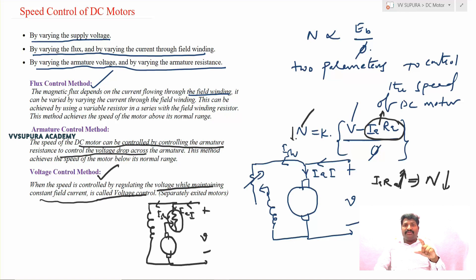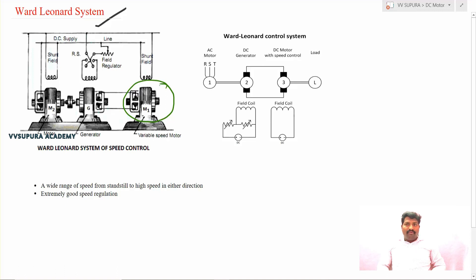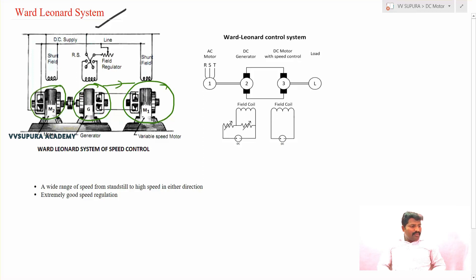In this voltage control method, the field flux or field current is maintained constant, and the supply voltage given to the armature is varied. One implementation is the Ward-Leonard method. In this system, a DC motor whose speed is to be controlled is supplied by a DC generator. To run this generator, another motor is used to provide mechanical energy.